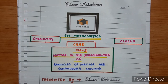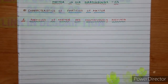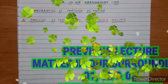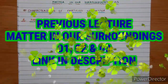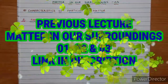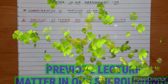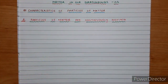So all those who have studied the previous lectures properly, they can open their notebooks and give the heading: Matter in Our Surroundings 05 — Characteristics of Particles of Matter — Particles of Matter are Continuously Moving। जिन लोगों ने पिछले lectures नहीं देखे, उन lectures का link description में है, पहले वो अच्छे से समझ कर आएं।